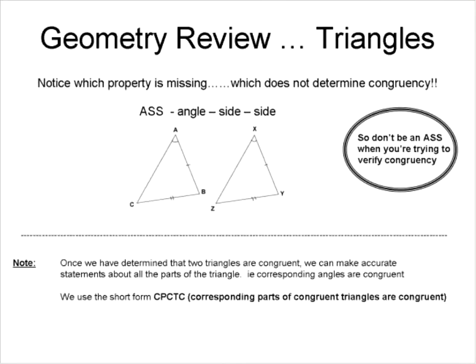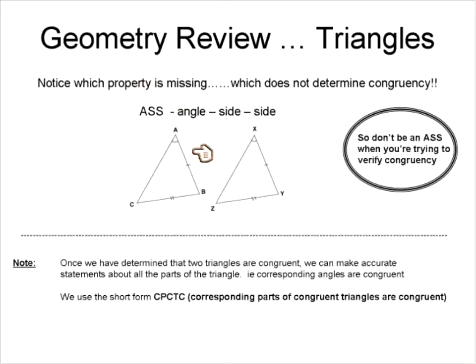Now, let's make an important note. There is one property that is missing and does NOT determine congruency: Angle-Side-Side (ASS). If you have angle-side-side, your triangles may be congruent but that isn't a proof — it doesn't verify they are congruent. You would have to find another angle or another side. As the instructor notes: don't use ASS when trying to verify congruency — angle-side-side is not a valid congruency property.